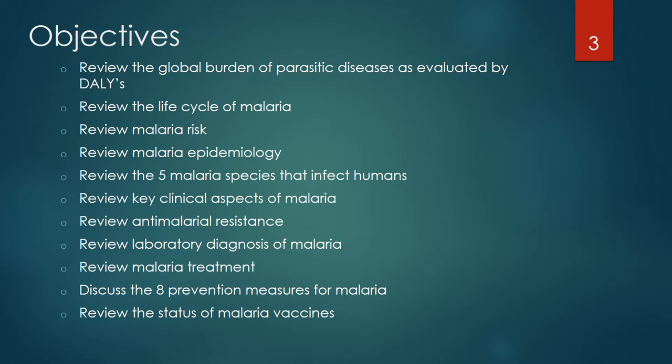Objectives include: review the global burden of parasitic diseases as evaluated by DALYs; review the life cycle of malaria; review malaria risk and epidemiology; review the five malaria species that infect humans; review key clinical aspects of malaria; review antimalarial resistance; review laboratory diagnosis of malaria; review malaria treatment; discuss the eight prevention measures for malaria; and review the status of malaria vaccines.